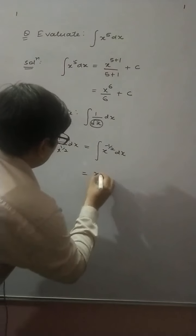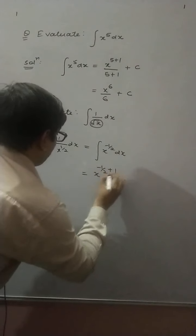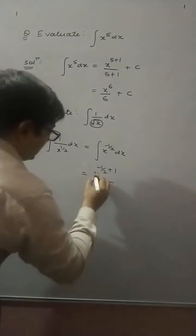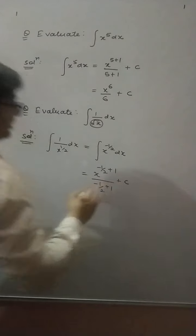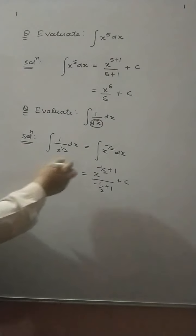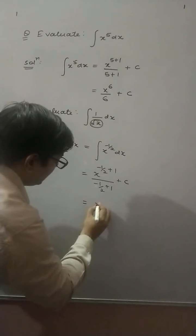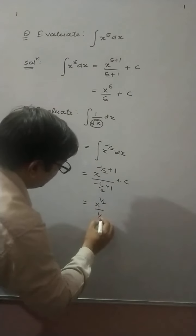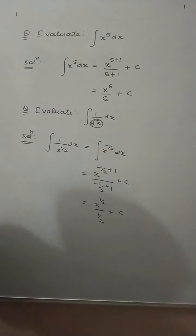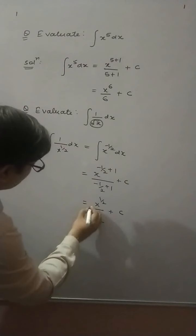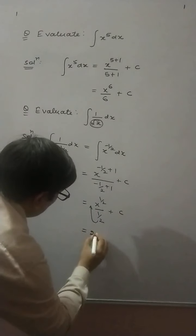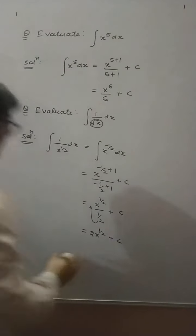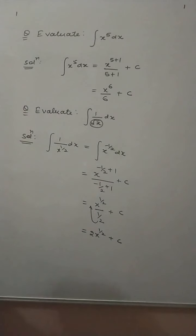To find the integration of x raised to power minus 1 by 2, you will add plus 1 to the power of x. So you get x raised to power minus 1 by 2 plus 1, divided by minus 1 by 2 plus 1, plus C. That simplifies to x raised to power 1 by 2 divided by 1 by 2, plus C. Shifting the 2 to the numerator gives 2x raised to power 1 by 2, plus C, which is the required result.